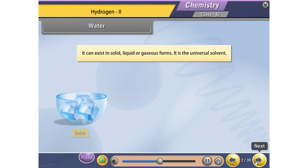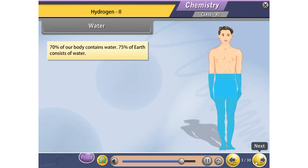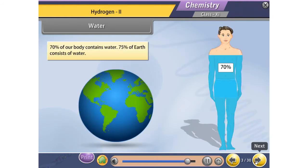It can exist in solid, liquid or gaseous forms. It is the universal solvent. 70% of our body contains water. 75% of earth consists of water.